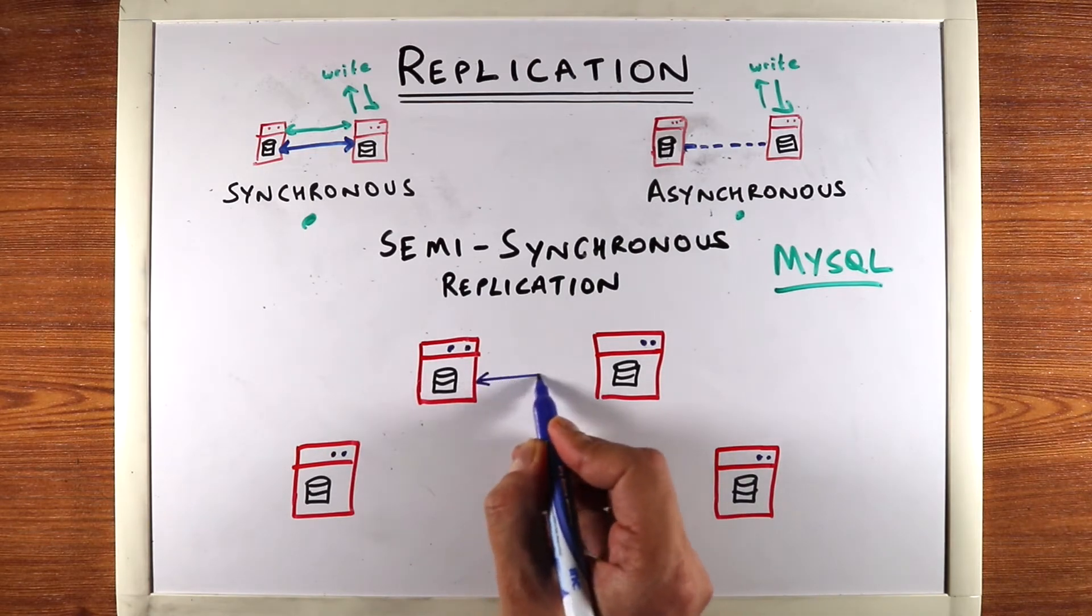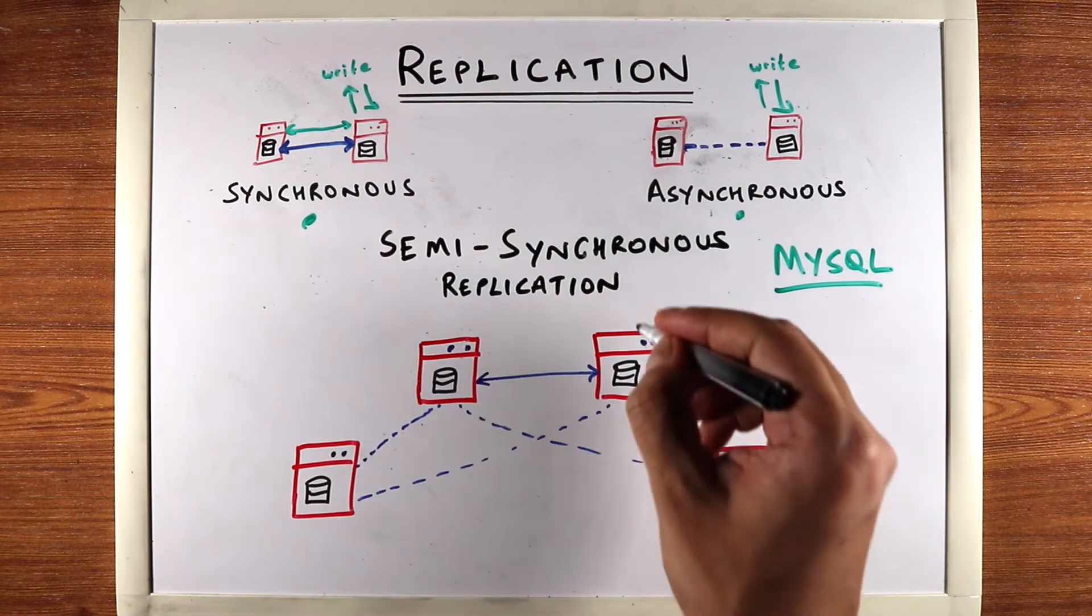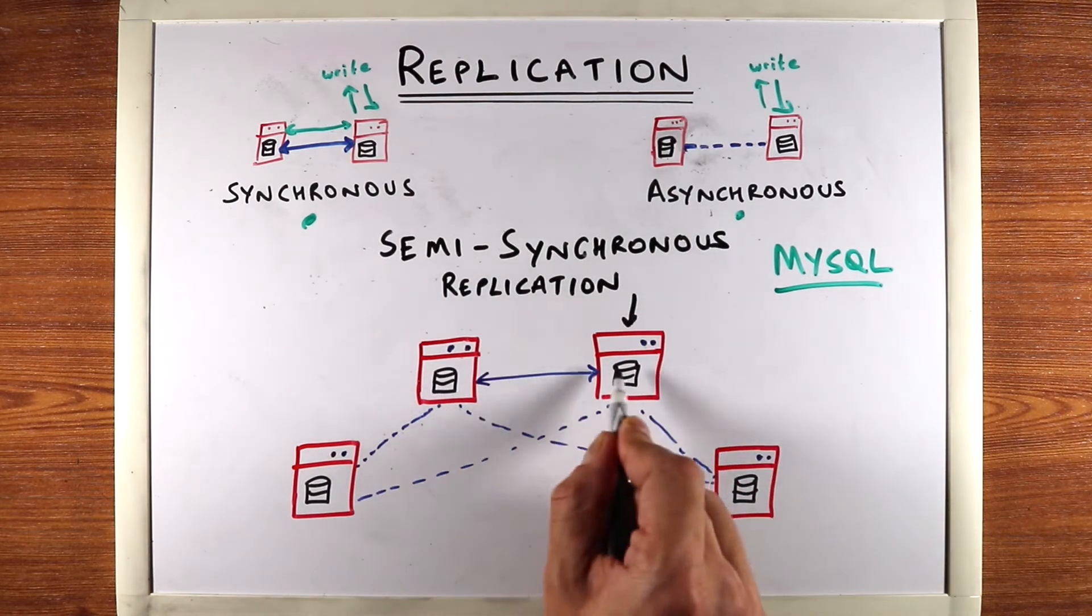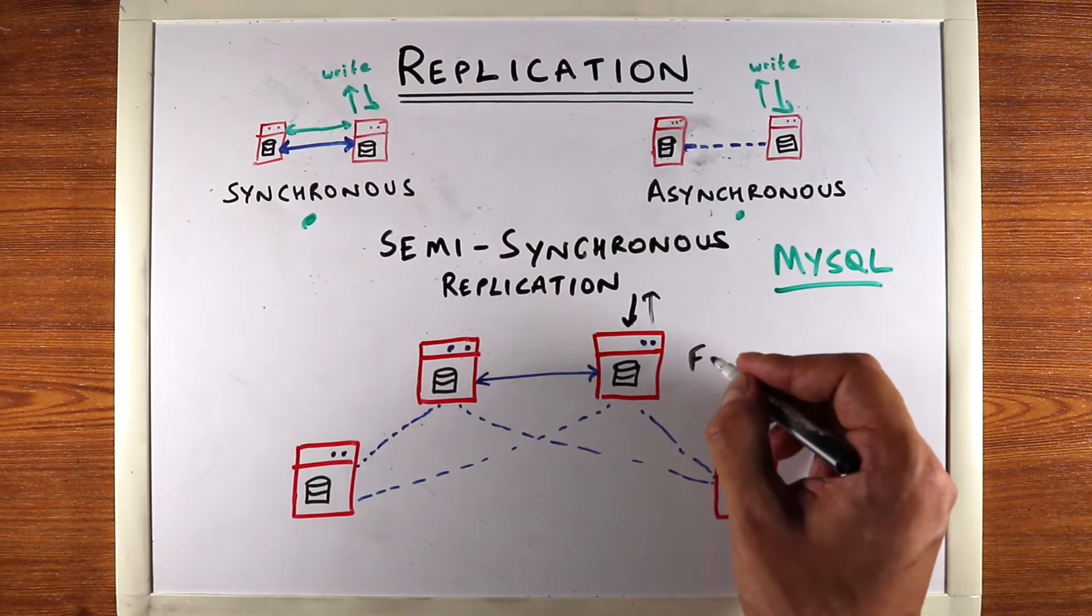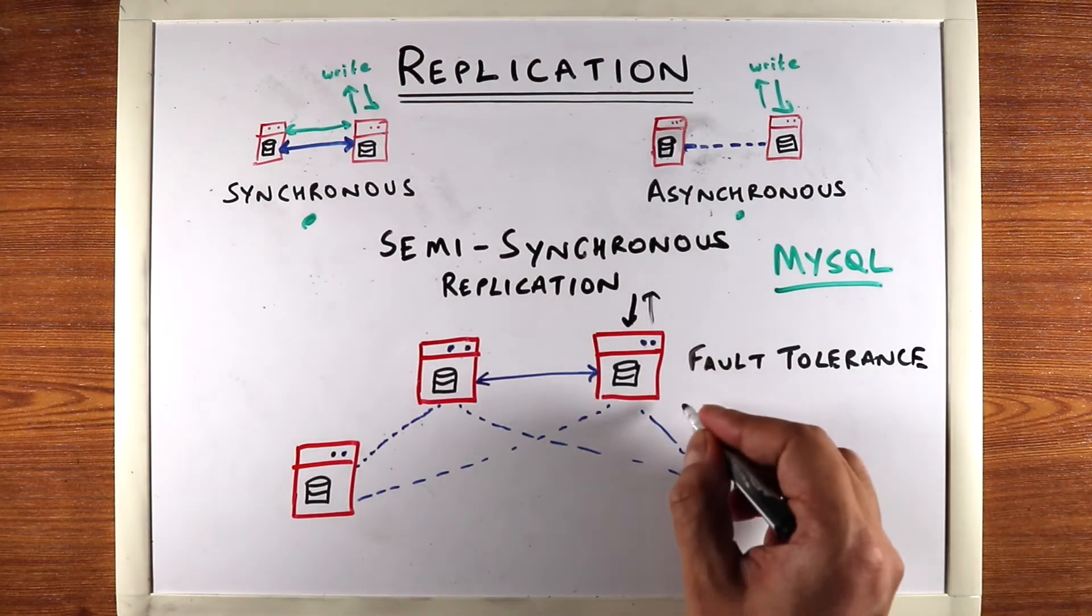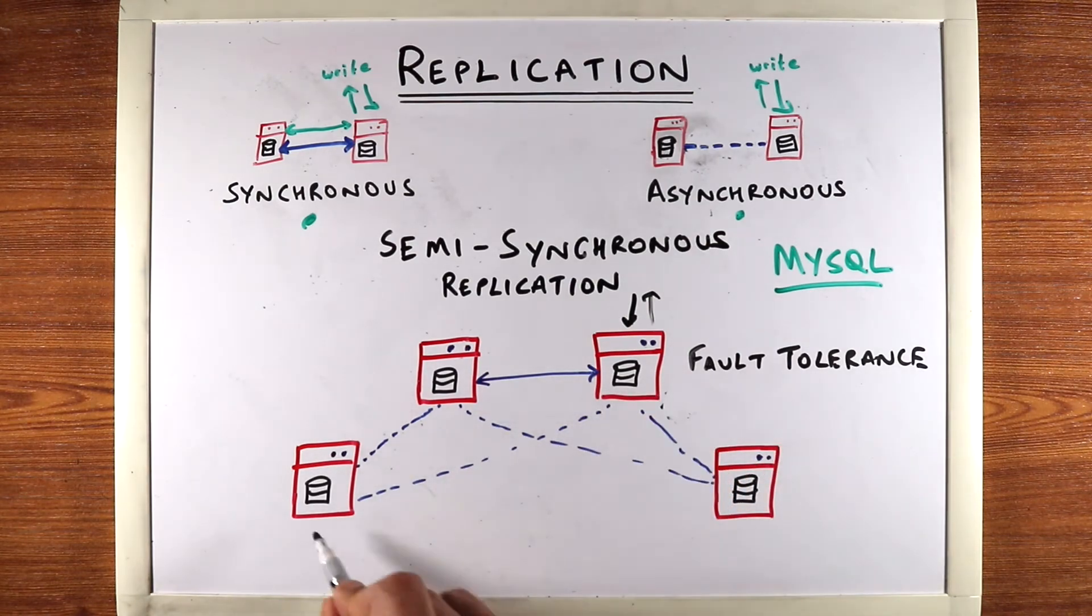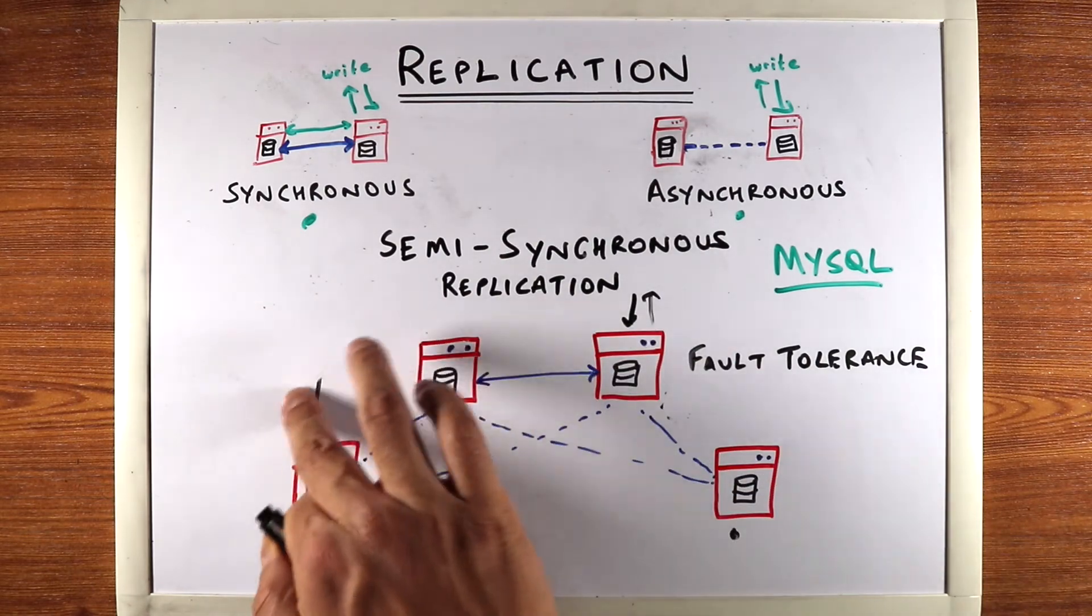When a write comes in, it will always be synchronously replicated between these two machines. So you'll get the fault tolerance benefits of synchronous replication, which means if one of these machines goes down, the second can always take its place. At the same time, these two machines are being replicated asynchronously, so they can serve as read replicas.